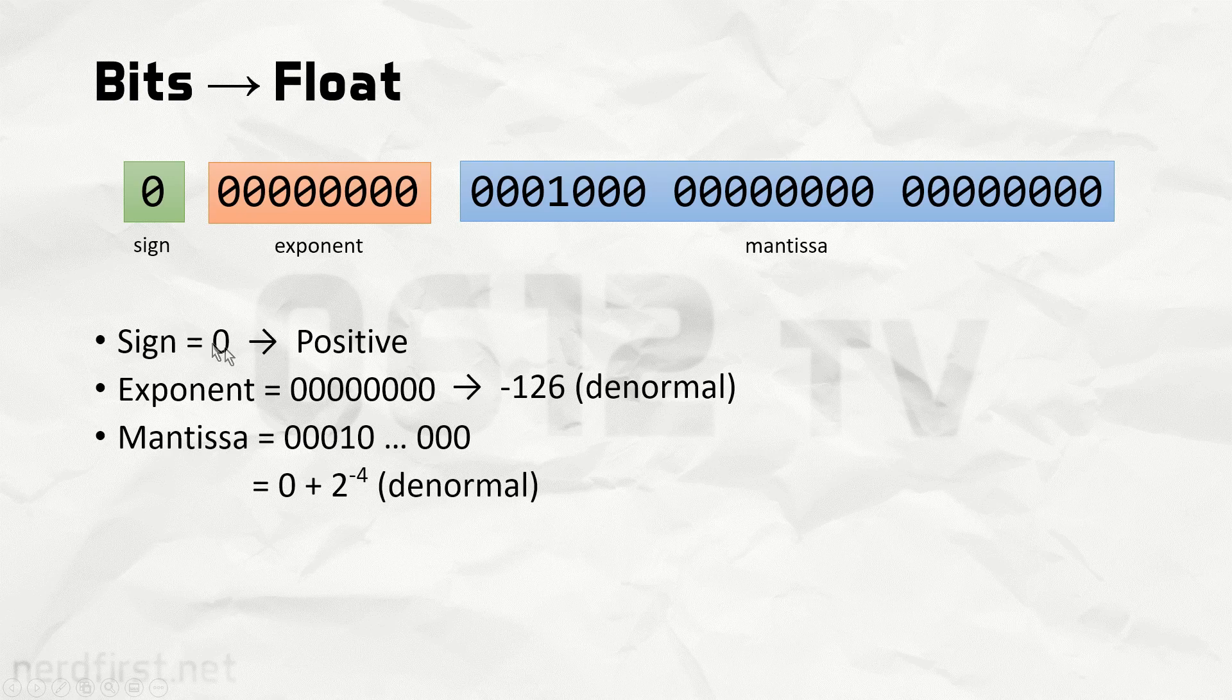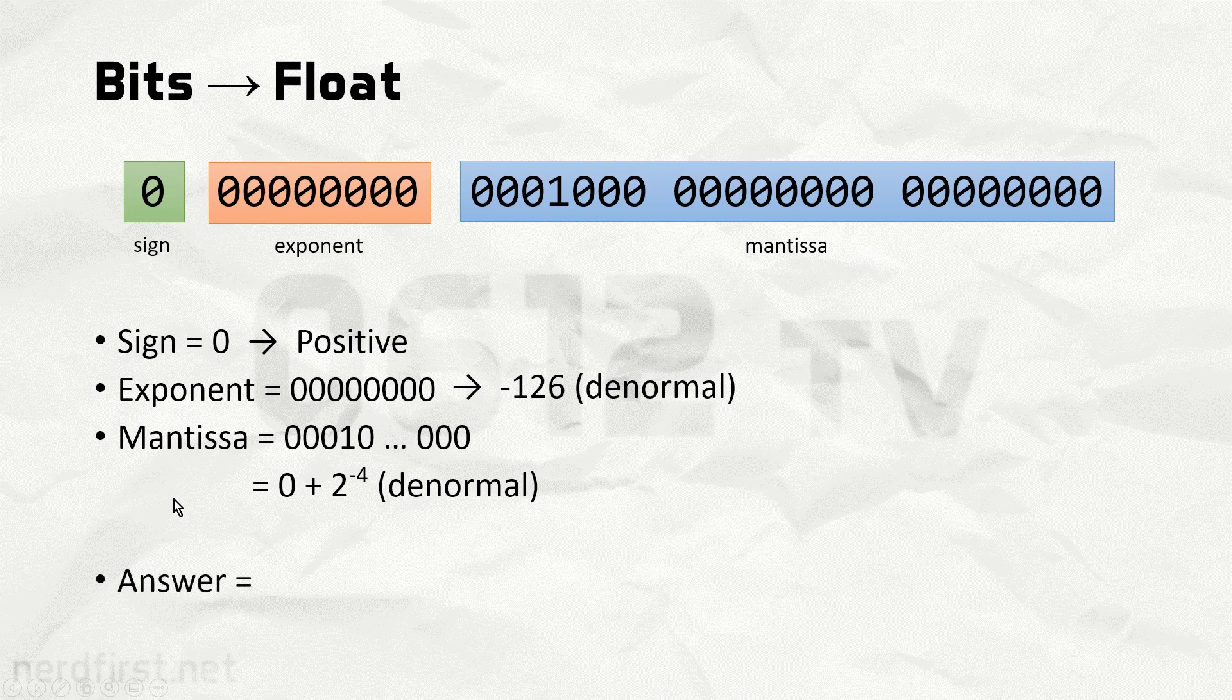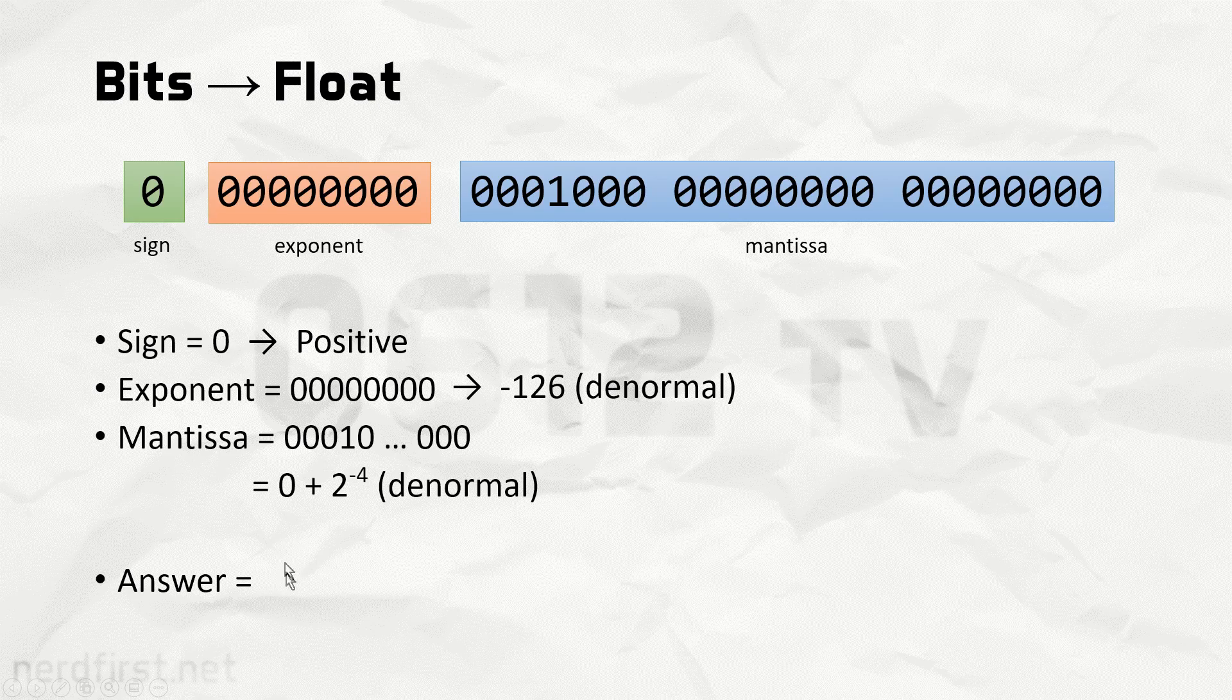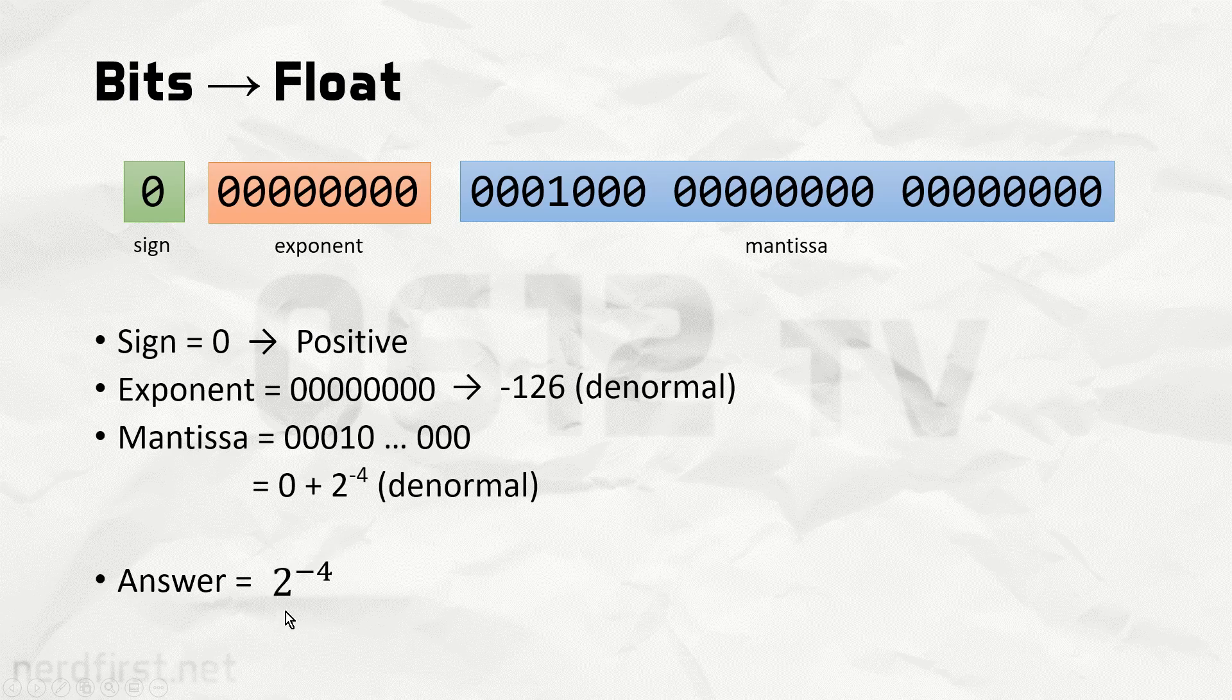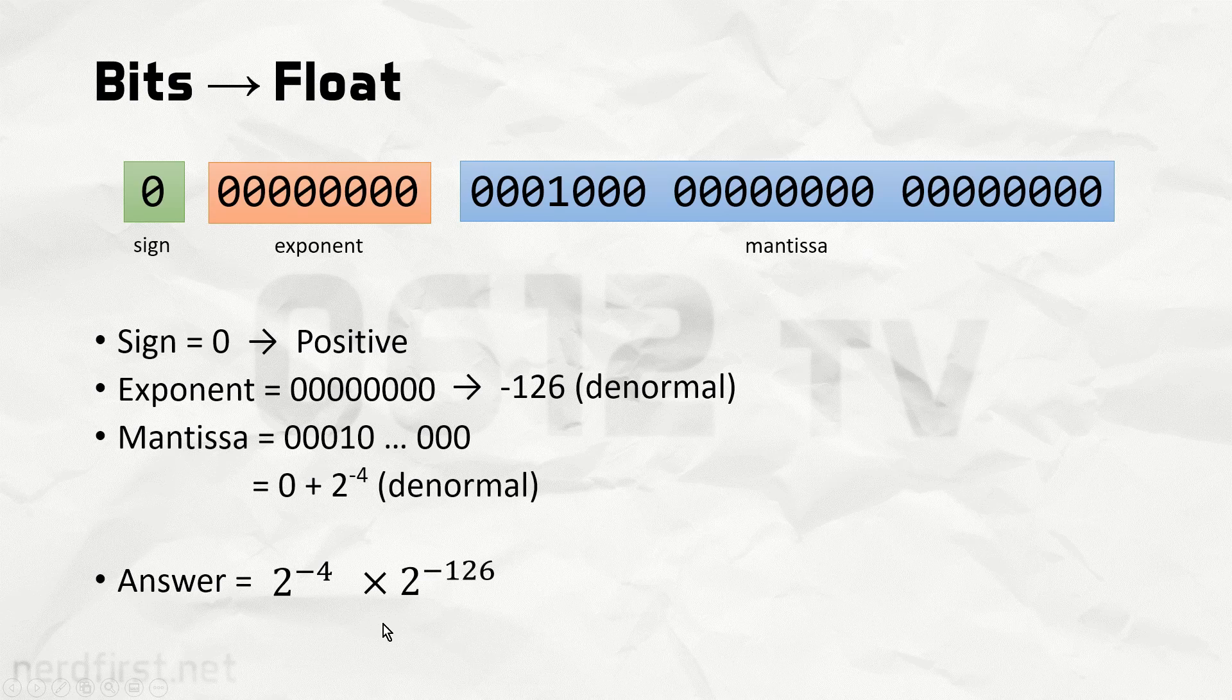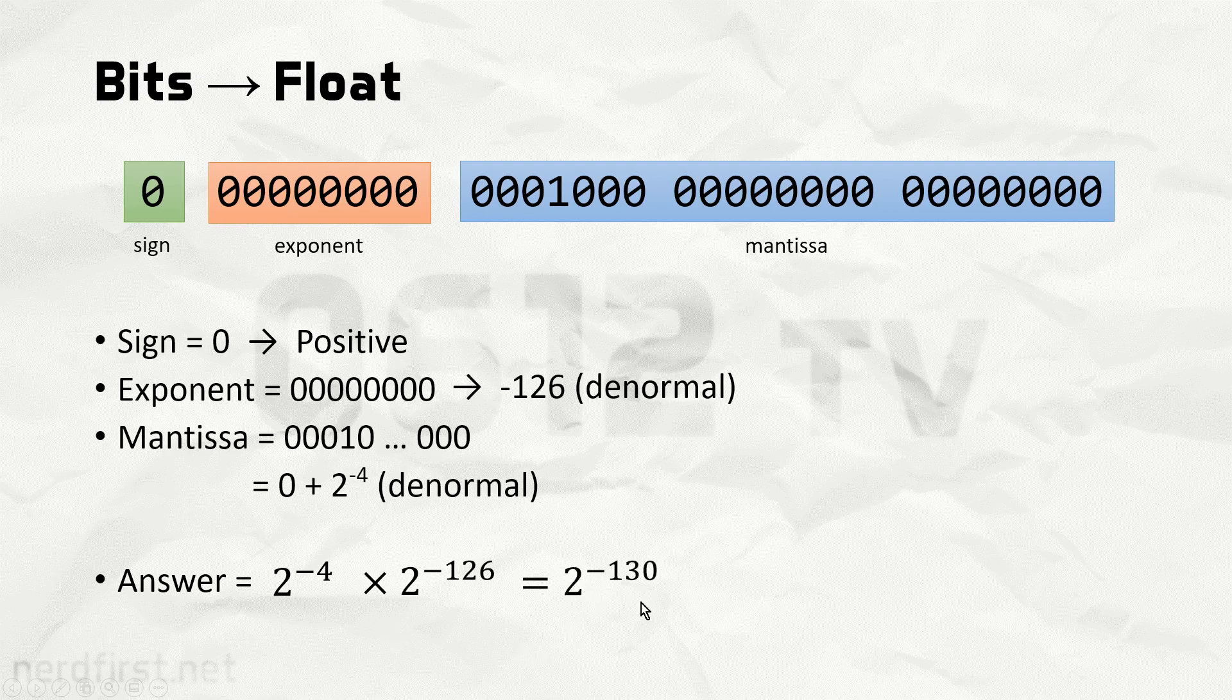So we have sign, exponent, and mantissa. We have all our information at hand, and what that means is we're able to derive the answer. With a positive sign, which we can just completely omit, we write down the mantissa value, which is 2 to the power of negative 4, and then we multiply that by 2 to the power of the exponent. Luckily this is simple math, giving us the answer of 2 to the power of negative 130.